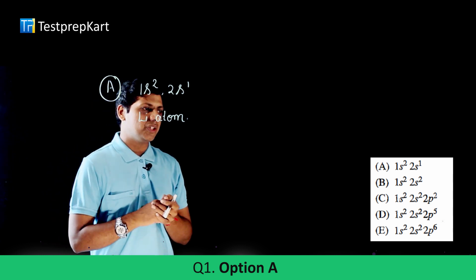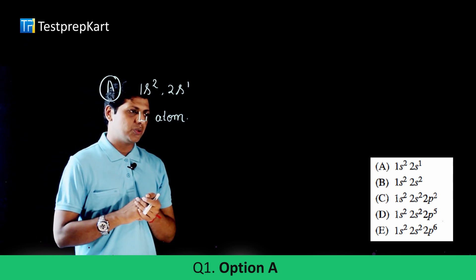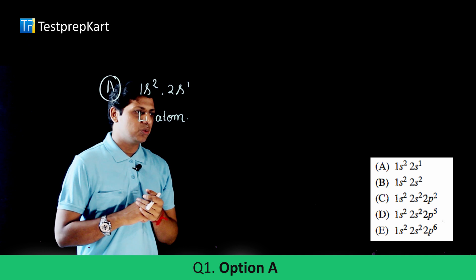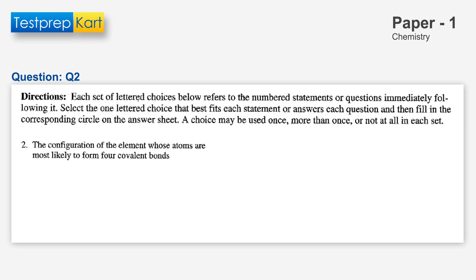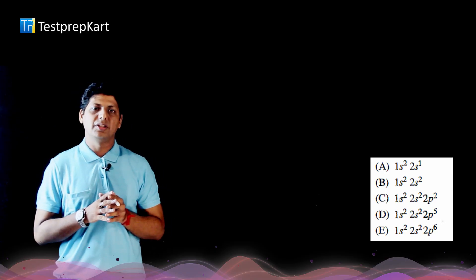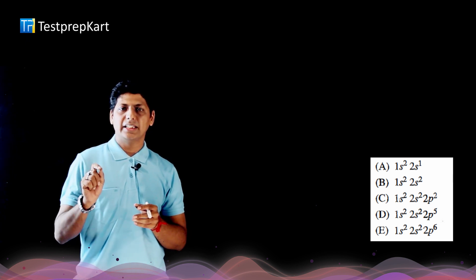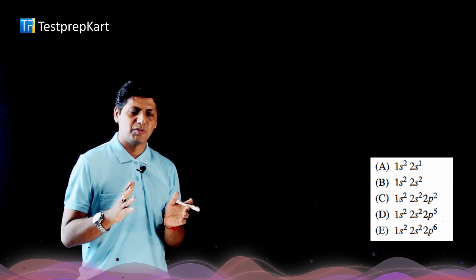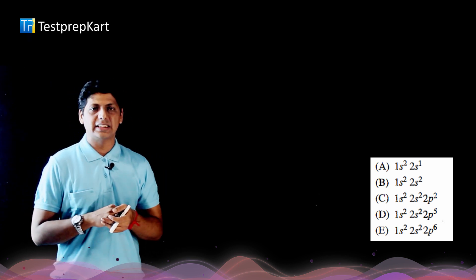In option C, 1s²2s²2p³, five electrons are in the valence shell. In option D, 1s²2s²2p⁵, seven electrons are present. In option E, 1s²2s²2p⁶, eight electrons are in the valence shell. Only an atom with four valence electrons in its outermost orbit can form four covalent bonds.